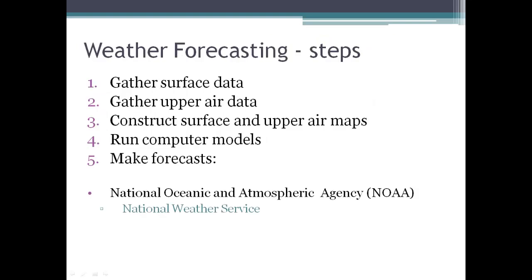Basically when you forecast the weather, the steps are like this. First you gather surface data — surface observations. Next you gather upper air observations about what's happening with the atmosphere higher up, and then you take your data and construct surface and upper air maps. We have computer models that you can plug this data into, and from that you make your forecasts.